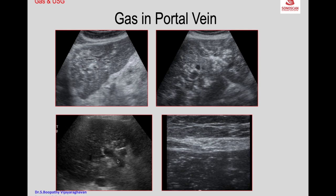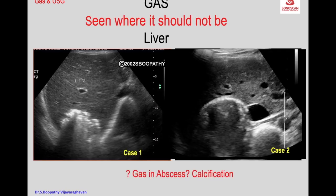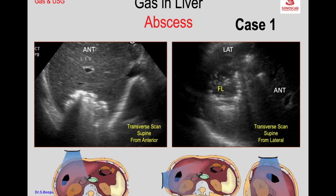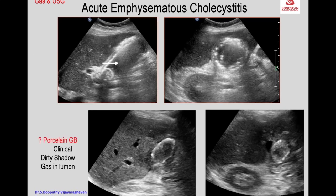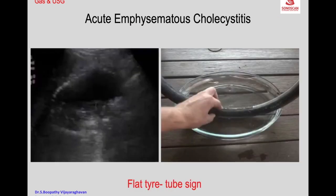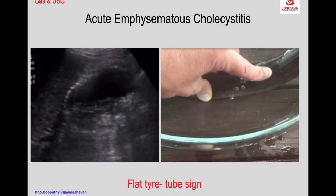The question arises: is it gas in an abscess or is it calcification? To differentiate — clinically, in calcification the patient will not be acutely sick, whereas in a liver abscess the anterior non-dependent part shows gas producing shadowing. This differentiates it from calcification and points to acute emphysematous cholecystitis.